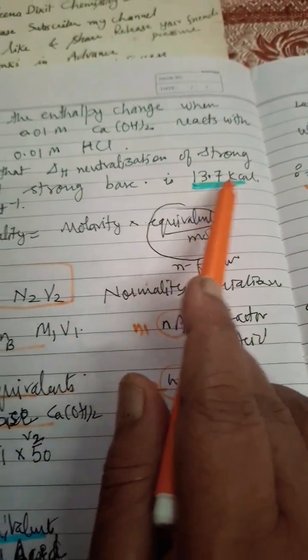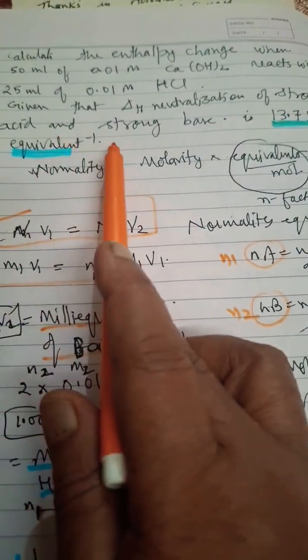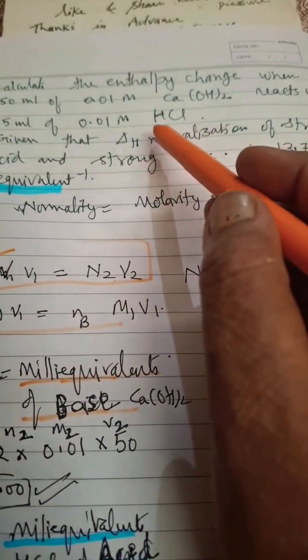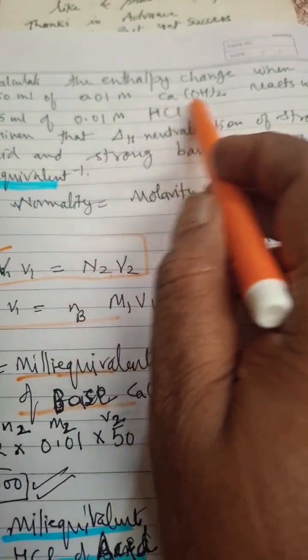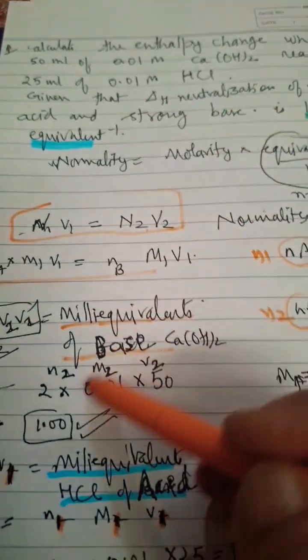Per equivalence means we have to use N1V1 equation. But here calcium hydroxide Ca(OH)2 will release 2 OH- ions, so n-factor is 2 for this base.